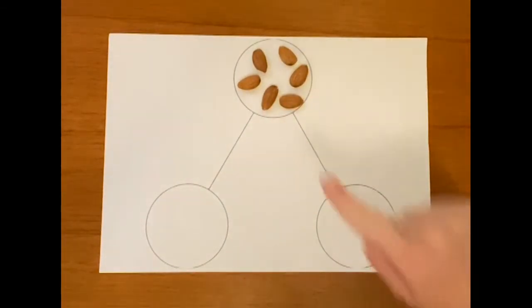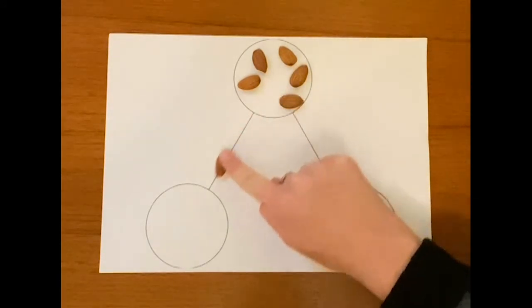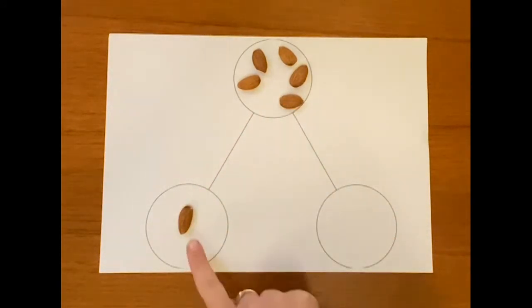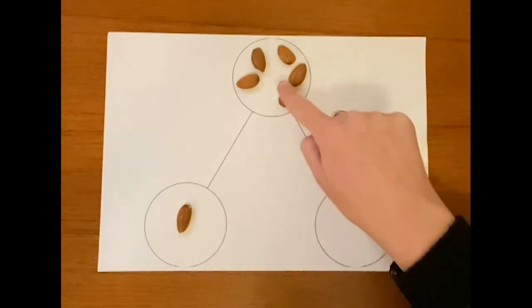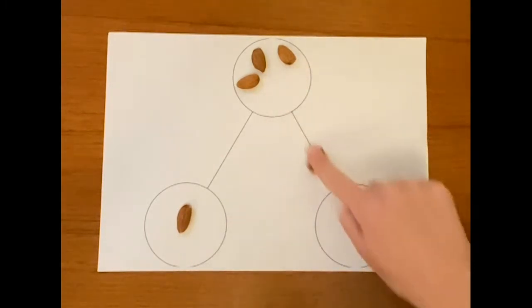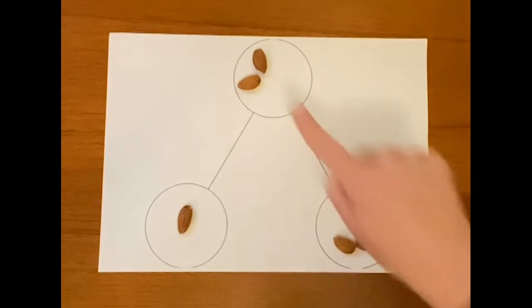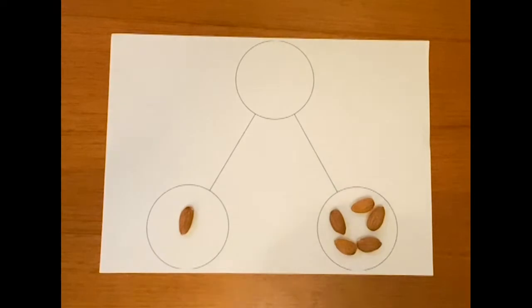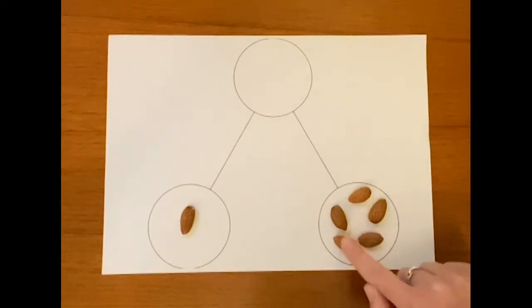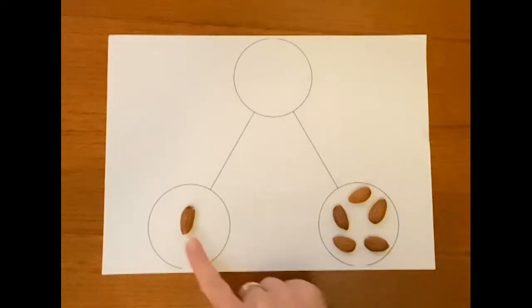Now one little nut is going to go all the way down here. So I've got one nut over here, the rest of them are going to come into this part, and that's why we call these bits the parts. In they go. So I've got one nut here. How many nuts have I got over here? Let's check. One, two, three, four, five.